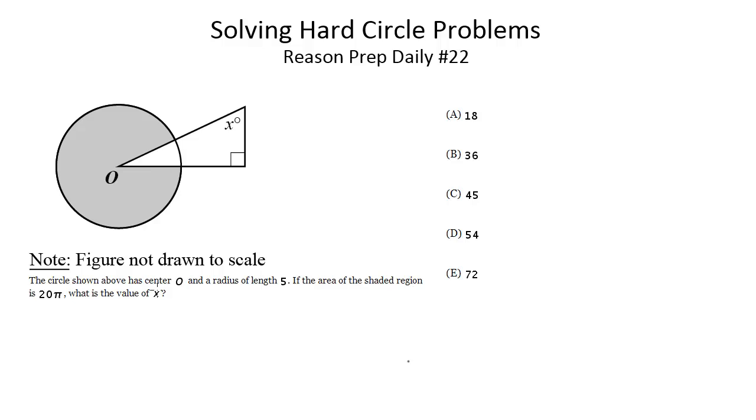So let's see. The circle shown above has center O and a radius of length 5. If the area of the shaded region is 20π, what is the value of x? Now at first glance, it seems like what does the area of the shaded region and the radius have to do with this angle of a triangle connected to the circle? This seems completely incongruous in terms of what this has to do with this.